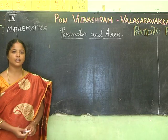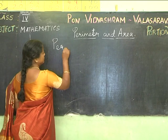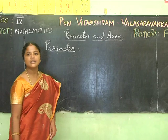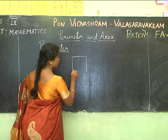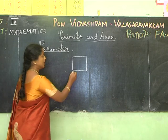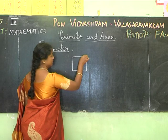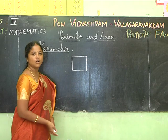What is perimeter? Perimeter is the distance around the edge of a figure — it is also called the length of the boundary. So if I have a figure, the length covered by going one round around it is called the perimeter.